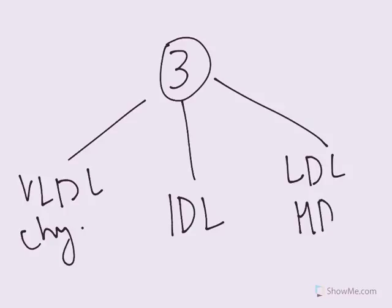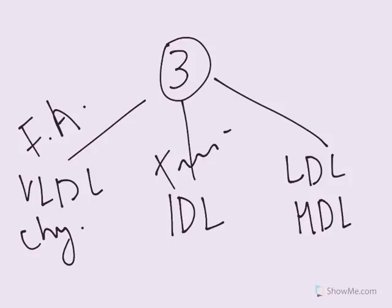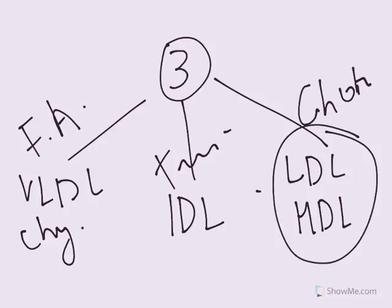First group is VLDL and chylomicrons, second group is IDL, and the last group is LDL and HDL. VLDL and chylomicrons are mainly carrying fatty acids and a little bit of cholesterol and some lipoprotein vitamins. IDL are just transfer proteins. And these are cholesterol proteins, LDL and HDL, and they have their own individual function.